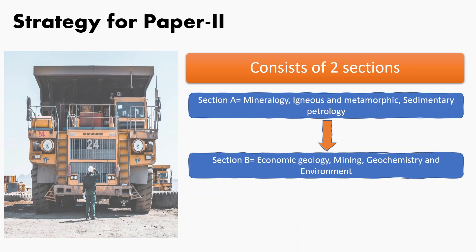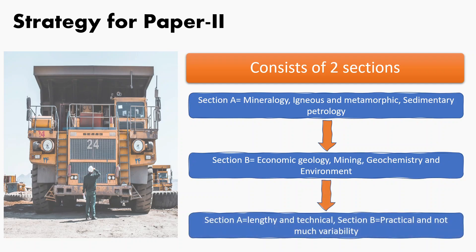The strategy for paper two is slightly different from paper one. Topics from section A, particularly igneous and metamorphic petrology, are trickier, and the questions asked over the years are getting more conceptual, sometimes not even available in standard textbooks. Topics from section B are more practical in nature, the syllabus is limited, and there is not much variation in the types of questions asked. You can also use your general studies and current affairs skills in environmental geology and mining geology. Therefore it is recommended to attempt two questions from section A and three from section B.